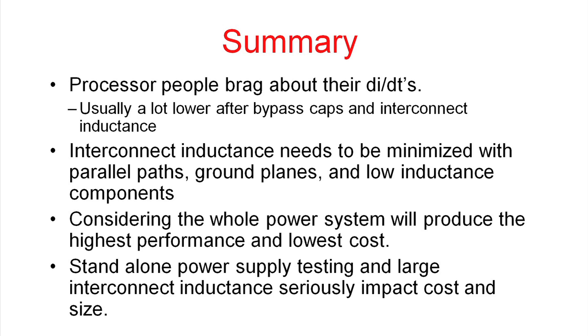As we saw, you can significantly impact the cost of your power system if you don't control the interconnect inductance. It needs to be minimized. Some ways you can do it: put parallel paths for your current to flow, build over your ground planes, and use low inductance components. That means sometimes small components and considering alternate terminations on your capacitors.